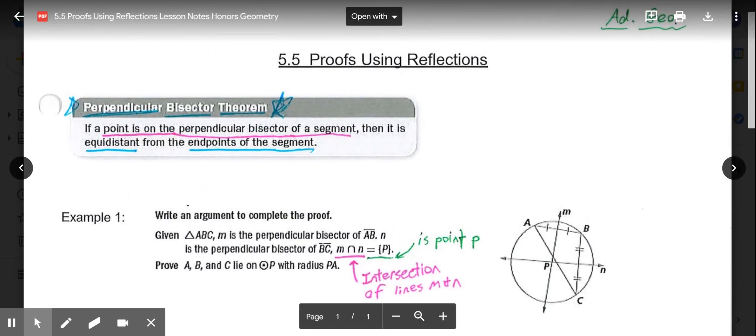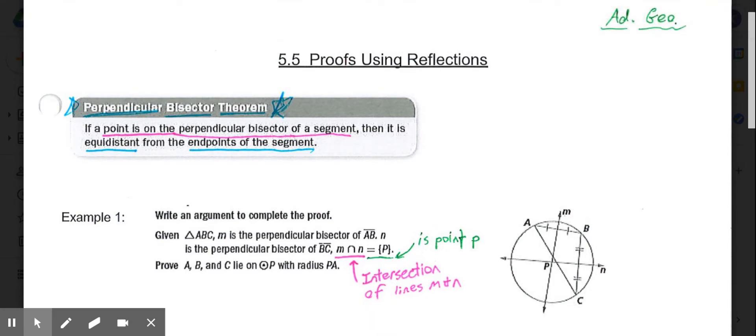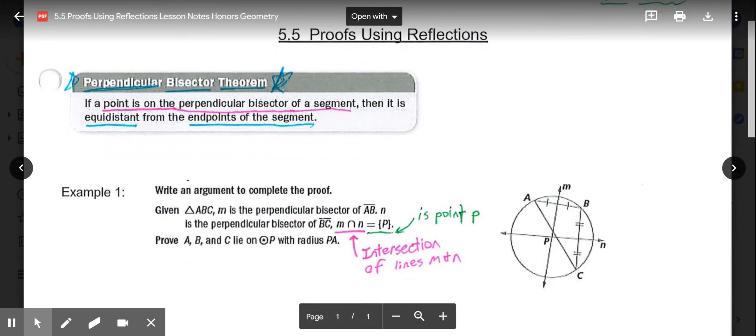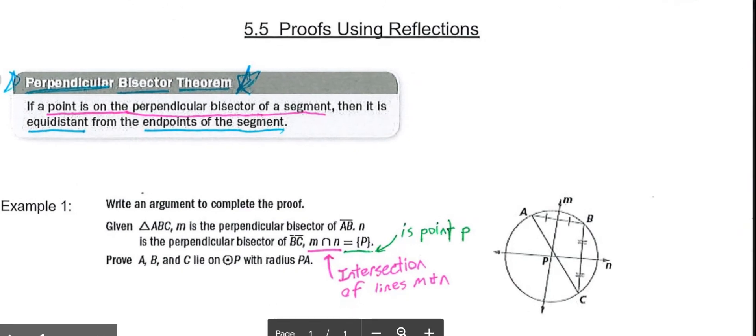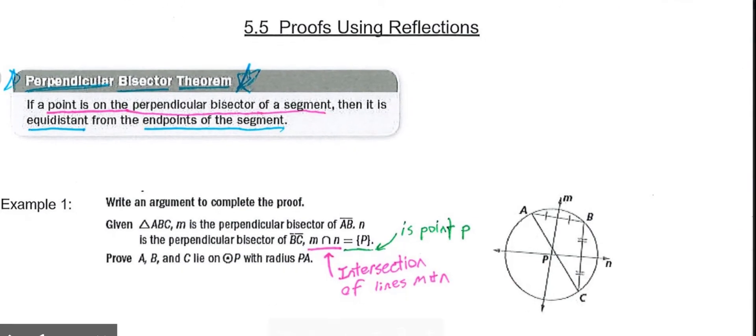Our new theorem for today that you'll be using in these reflection proofs is the perpendicular bisector theorem. What the perpendicular bisector theorem states is, if a point is on the perpendicular bisector of a segment, then it is equidistant from the endpoints of the segment. For example, if I knew that line M right here was the perpendicular bisector of AB, so if line M is bisecting AB at 90 degrees,